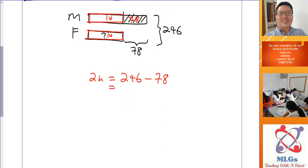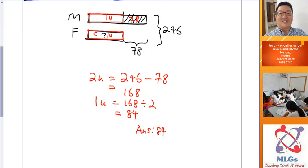Model drawing is about making units, so once you find how many units equals a value, you find what one unit is. 168 divided by 2 gives you 84, so one unit equals 84. The females have one unit, so there are 84 female teachers. You make short units when you want to find the shorter rectangle — in this case the females have the shorter rectangle, so you make short units.